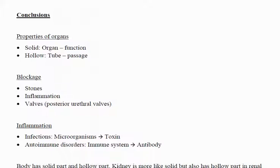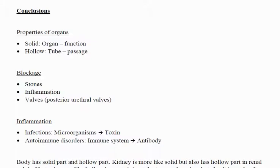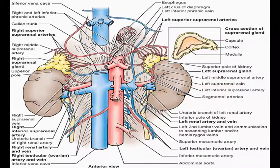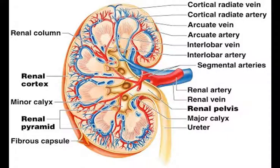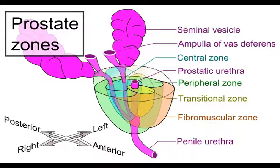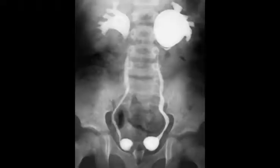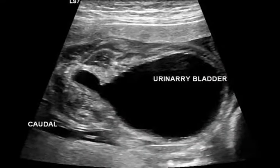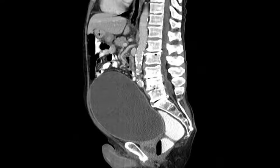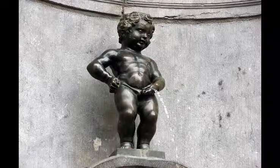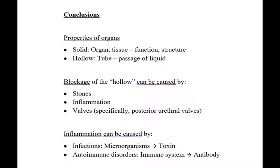In conclusion, the body has solid and hollow parts. The kidney is more solid but also has a hollow part in the renal pelvis. The ureter is hollow because it is a tube to pass urine, but it is also made of muscle tissue. The bladder has both solid and hollow properties — it can hold urine and is made of thicker muscle tissues. In pathology, the solid part can have inflammation and the hollow part can get blocked. Inflammation can change the structure of tissues, and blockage can obstruct or stop the flow of urine, causing it to flow backward and become trapped upstream of the blockage.